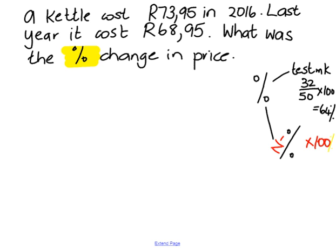Now you have to go to your explanation and find two values. Which is the old value? We're going to set up: percentage change equals new minus old over old.